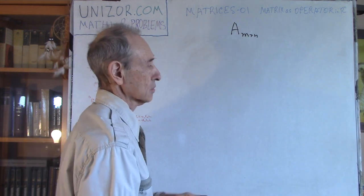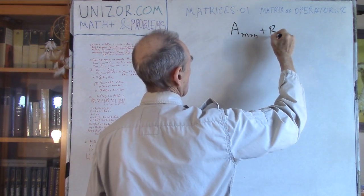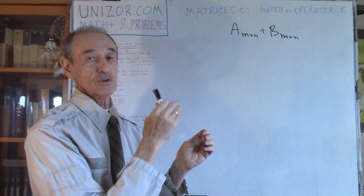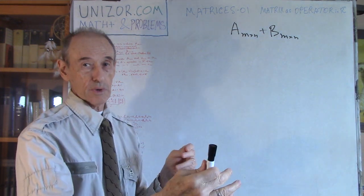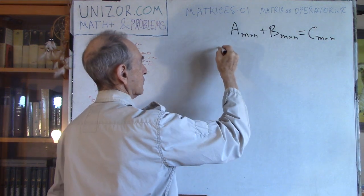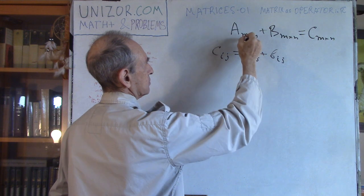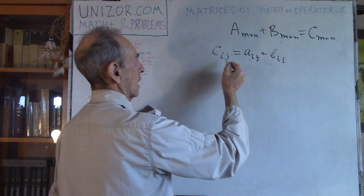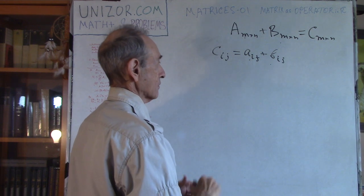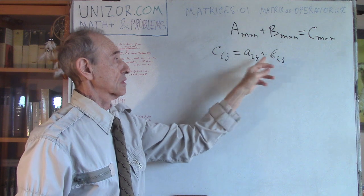We also know the basic operations with matrices. For example, you can add two matrices together, but they must have the same dimensions — the same number of rows and the same number of columns. The addition is adding every element to a corresponding element, so the result has the same dimensions, where every element C_ij equals A_ij plus B_ij, with i from 1 to M and j from 1 to N. This is a commutative operation.